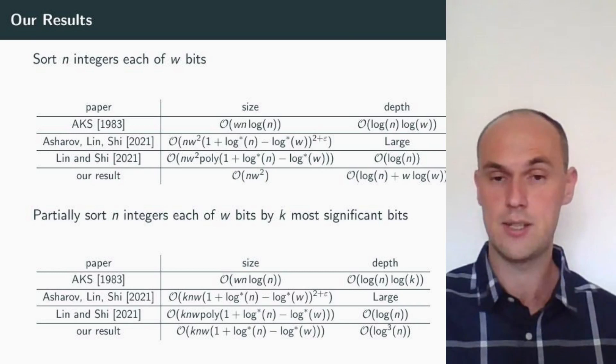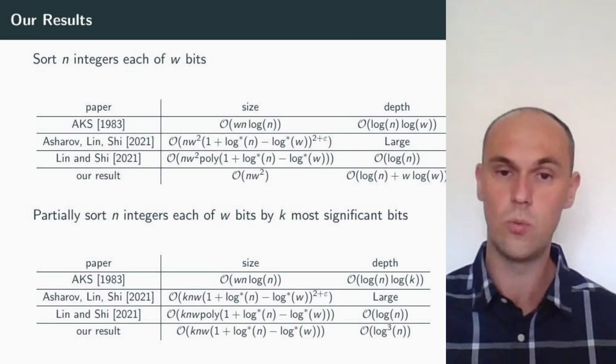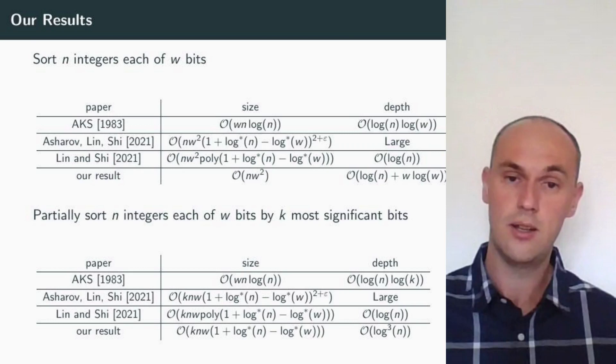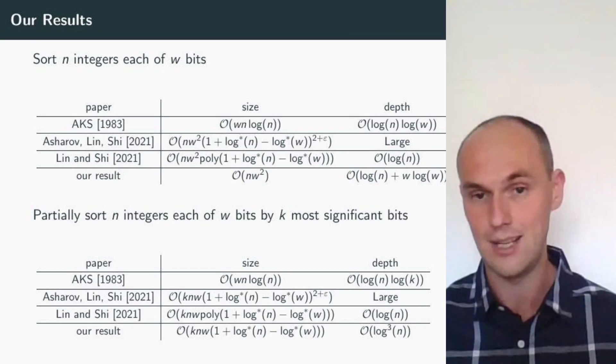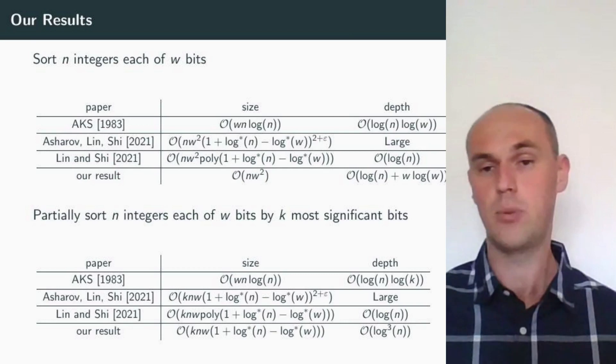Our result is getting rid of almost one term with iterated logarithm, namely instead of the term with iterated logarithm squared, we have it linearly. So we have circuits of size k n w times iterated logarithm term while preserving polylogarithmic depth.